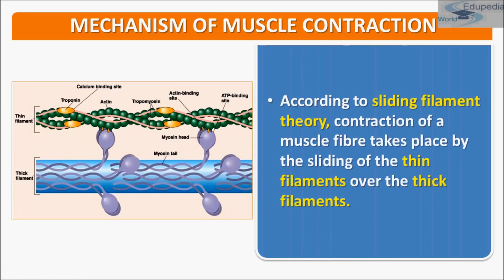According to the sliding filament theory, which was covered in the previous presentation, contraction of a muscle fiber takes place by the sliding of the thin filament — that is actin — over the thick filament — that is myosin. This is the thick filament, and this is the thin filament; thin filament is actin and thick filament is myosin.